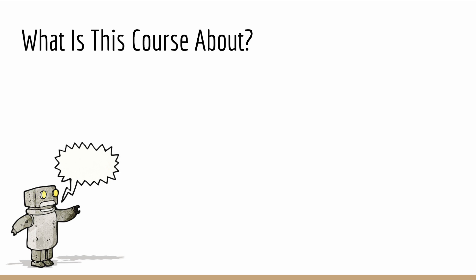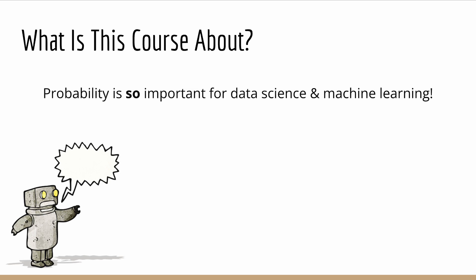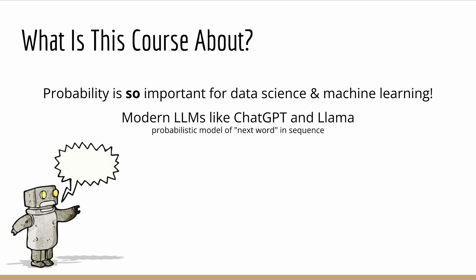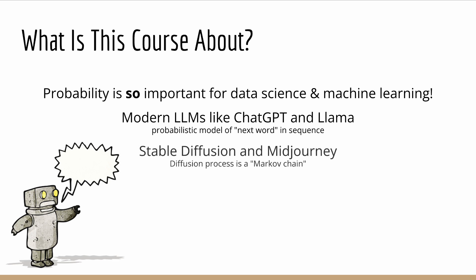So what is this course all about? Well, as the title suggests, this course is all about probability. If you're here, you probably already know why probability is so important in data science and machine learning. Probability is everywhere — you simply cannot avoid it. From language models like ChatGPT to image generators like Stable Diffusion and Midjourney, probability is used.